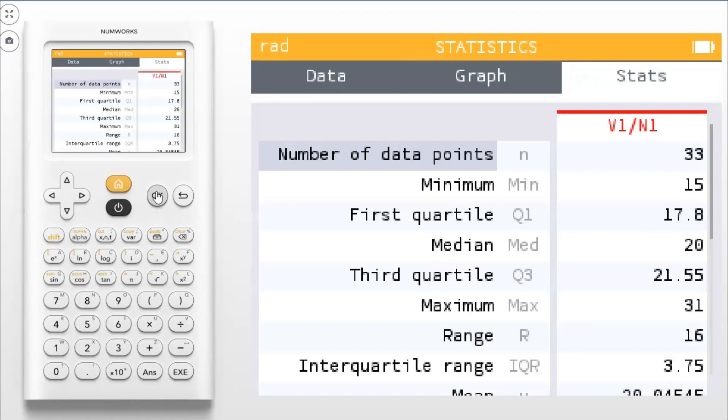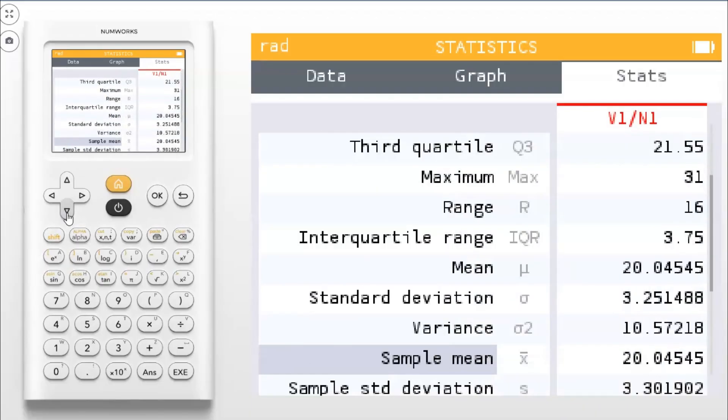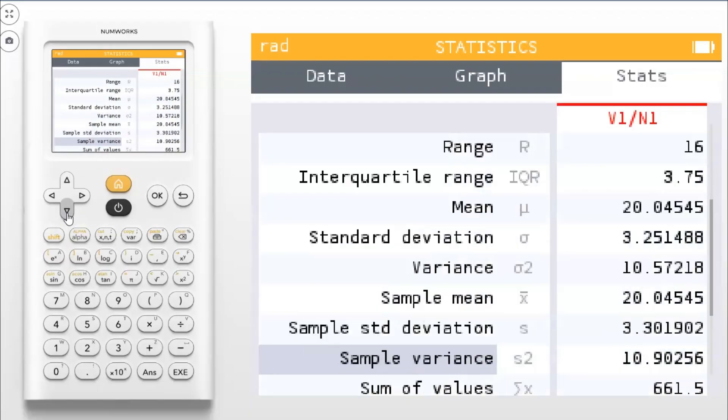Then across the top, you can go to the stats tab. And this will give you all the statistics you need on the data you entered in. It gives the minimum, the first quartile, the median, third quartile, and the max. That's known as the five-number summary. Range, interquartile range, mean, standard deviation, variance, sample mean, sample standard deviation.